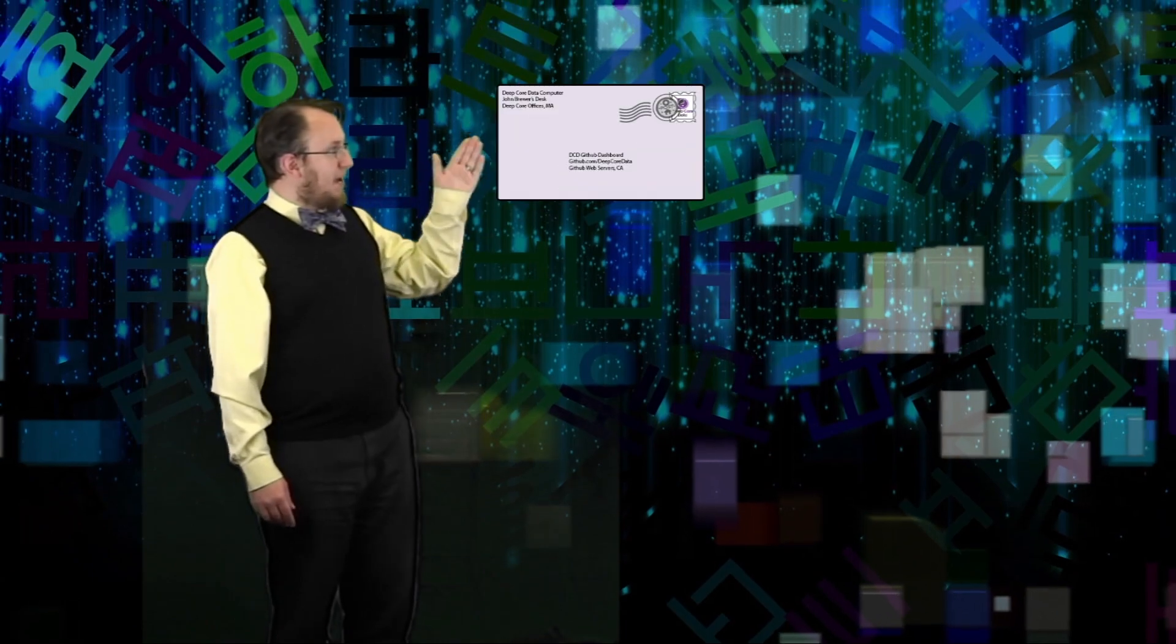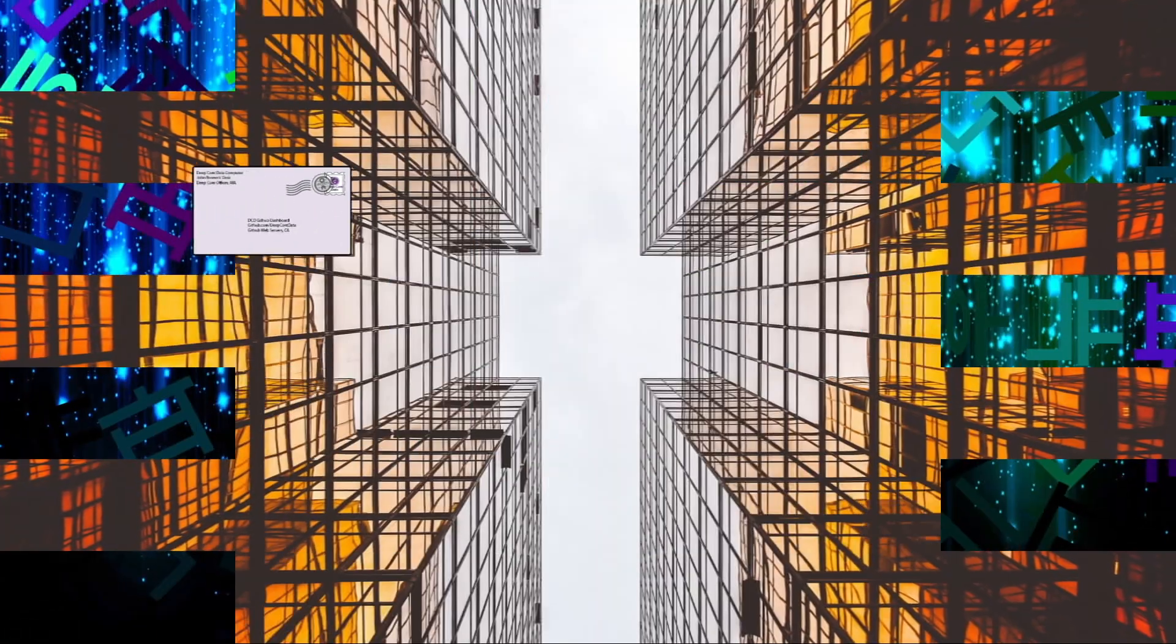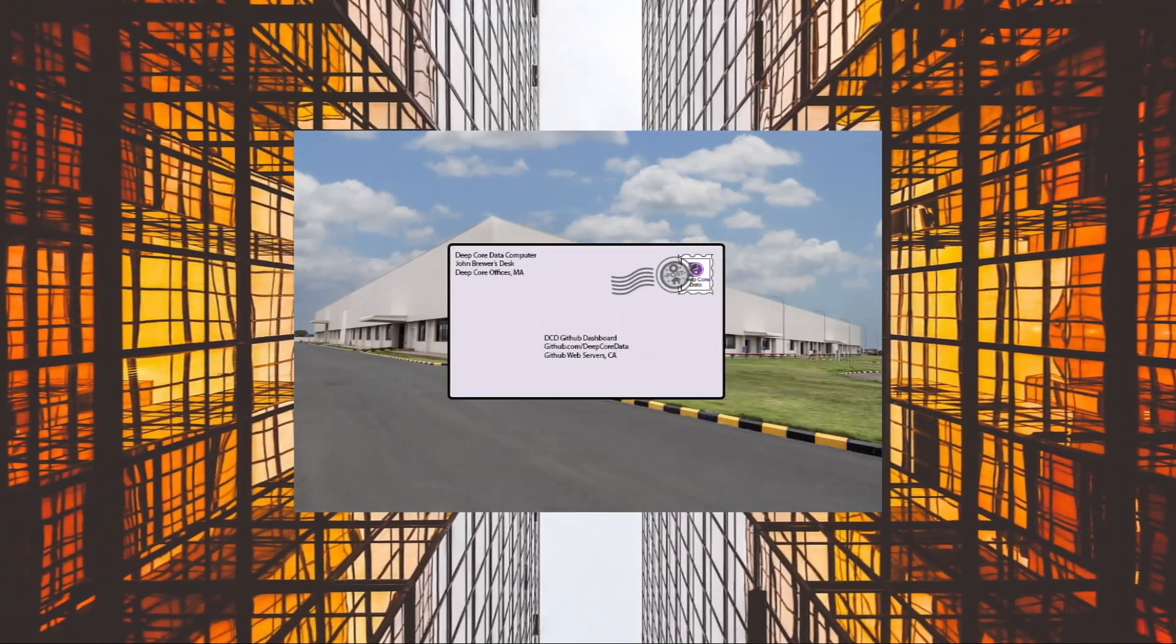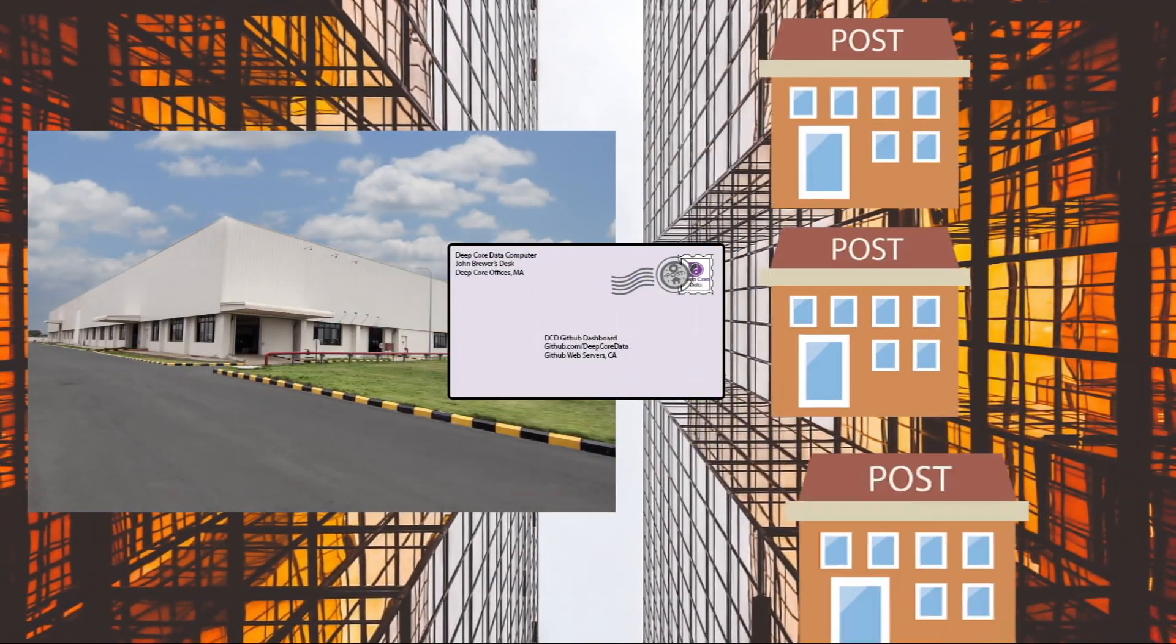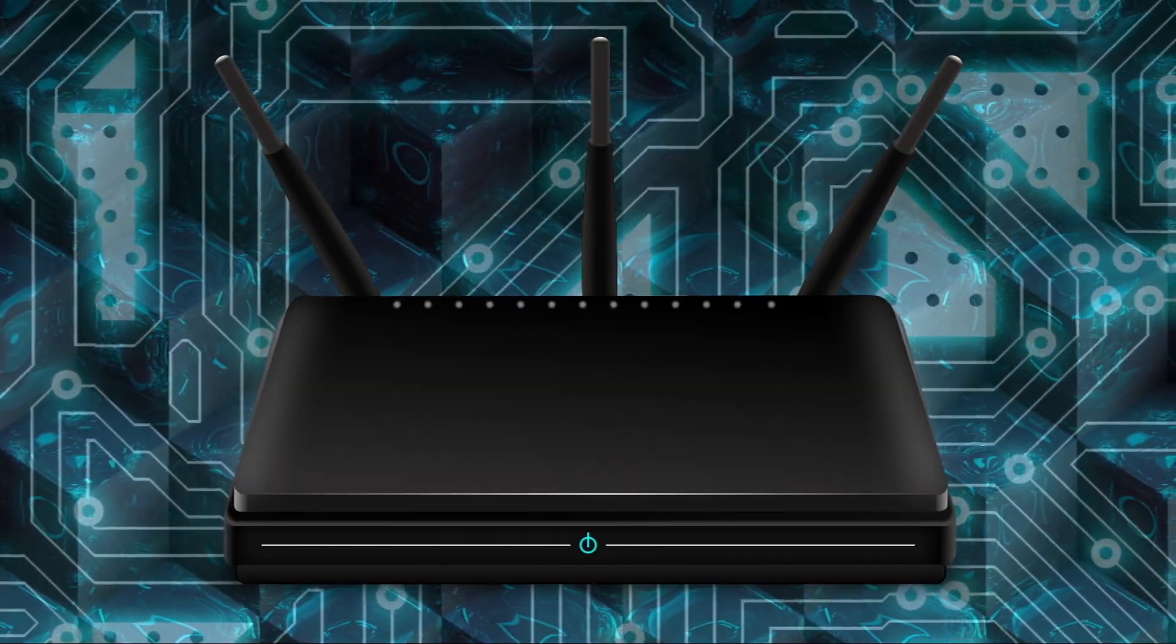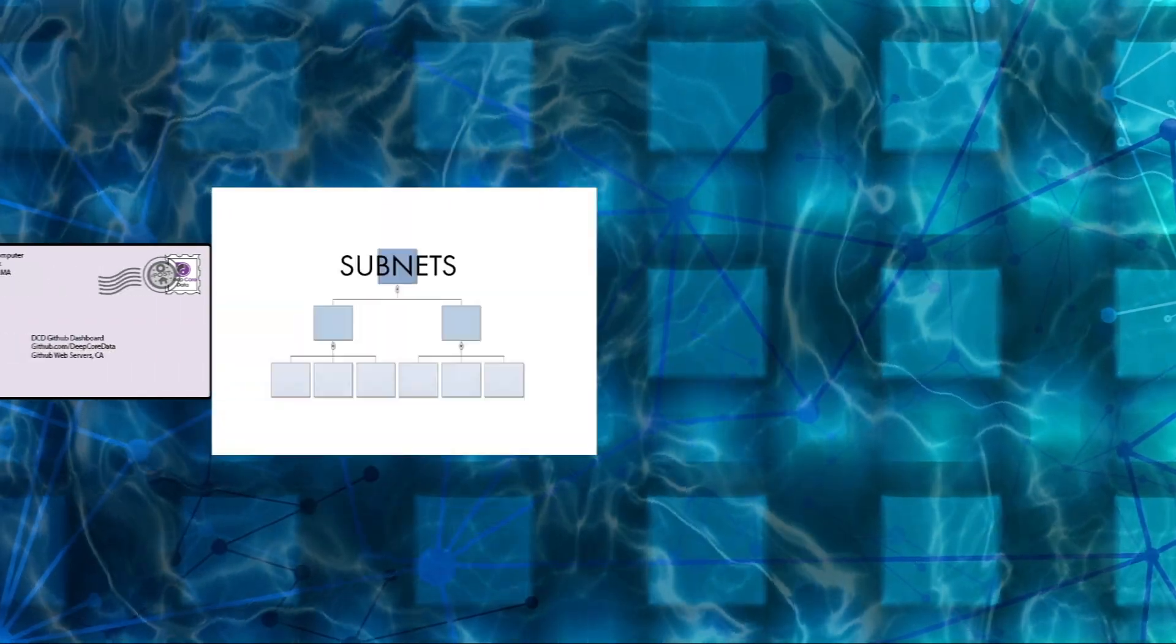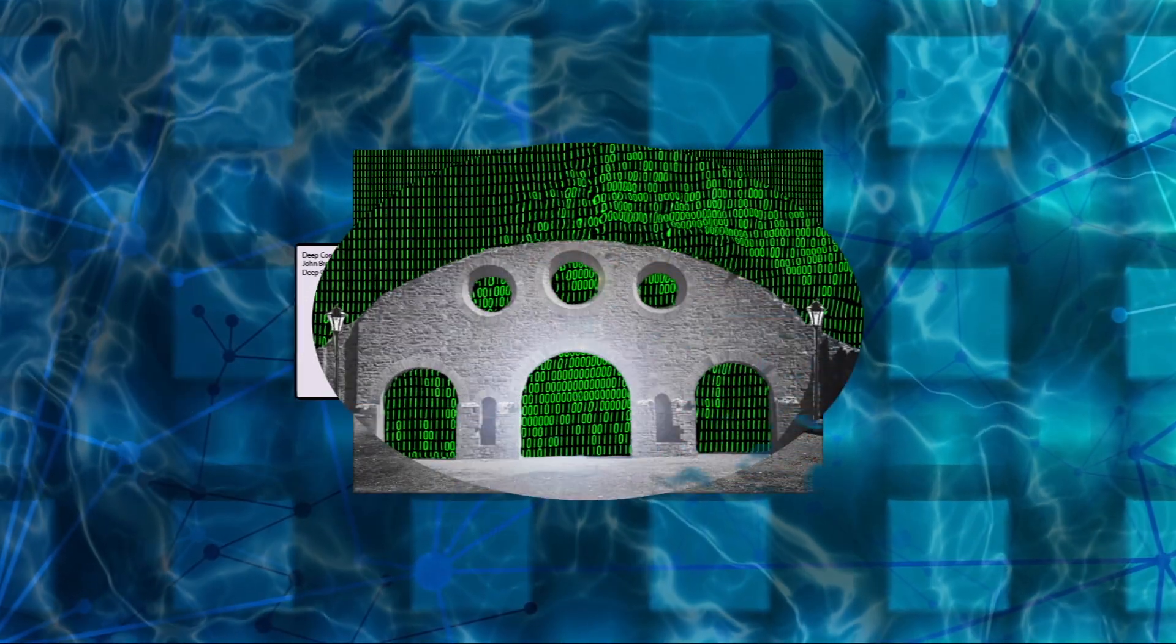When a router receives a packet, it checks to see whether it's going to any of the subnets it knows about. So like when a city distribution center receives a letter, it then decides which of the local post offices can deliver it, if any. If it's one of the local zip codes, the router sends the packet to that subnet to be delivered. If no subnet contains the destination address, it sends it back through the gateway to the public network, where a higher level router will repeat the process.